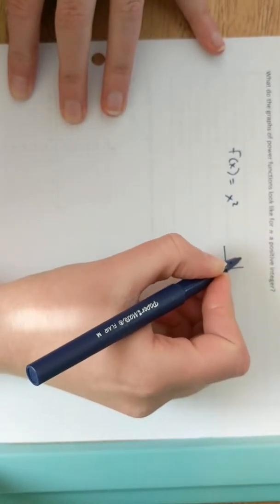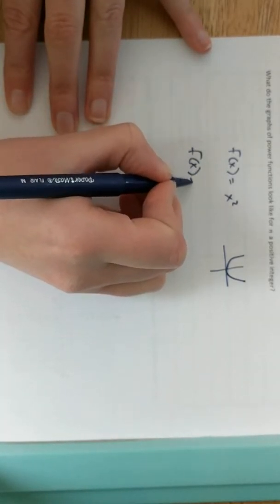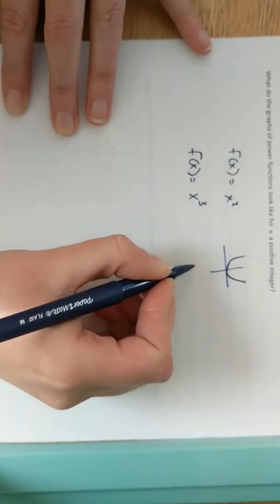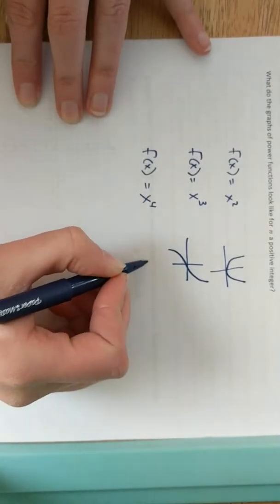So you grab a calculator, you can graph a couple functions, like f of x equals x squared. You may already know what that shape looks like. Then you can graph a few other power functions where they're going to have just different integers. So how about x cubed? And if you use your calculator, you can get a sketch for this graph.